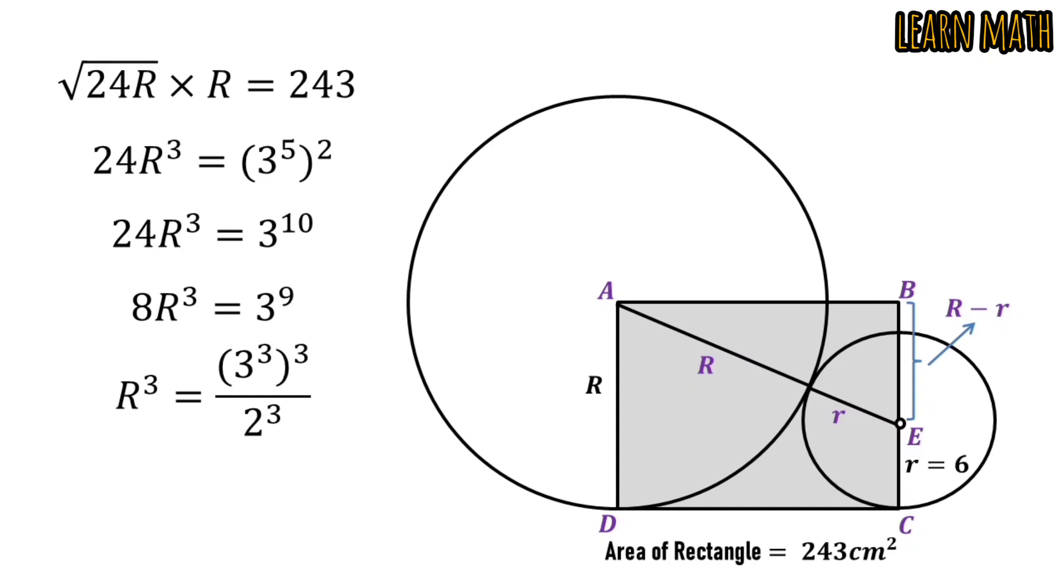Taking whole power 1/3 both sides and we will get R is equal to 27/2, which is the required radius of the big circle.